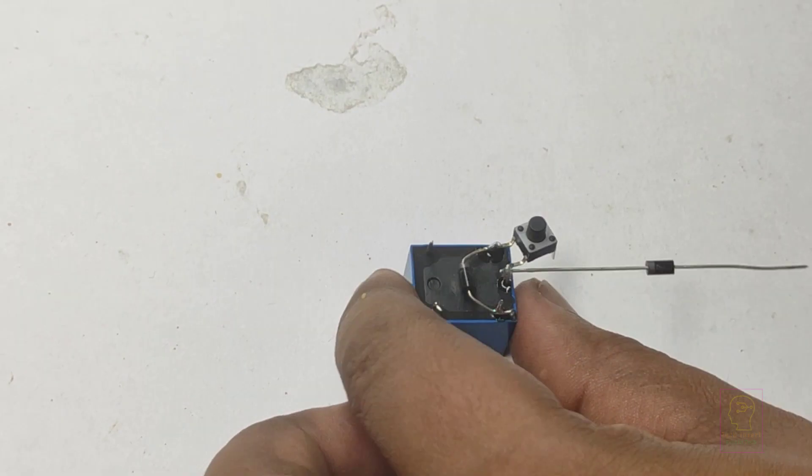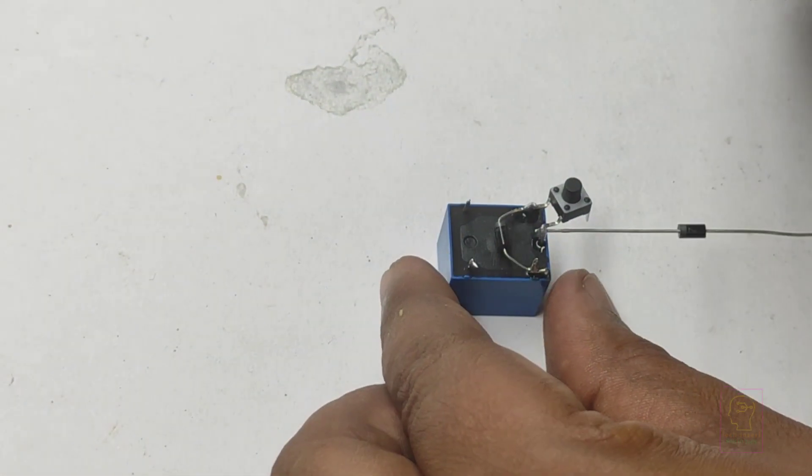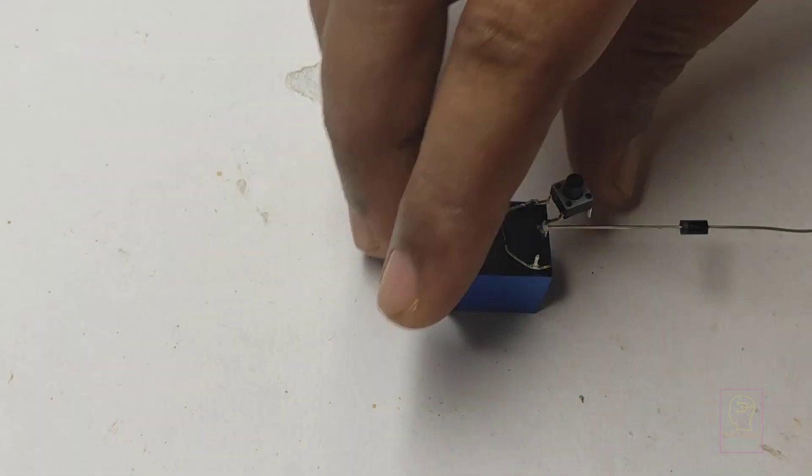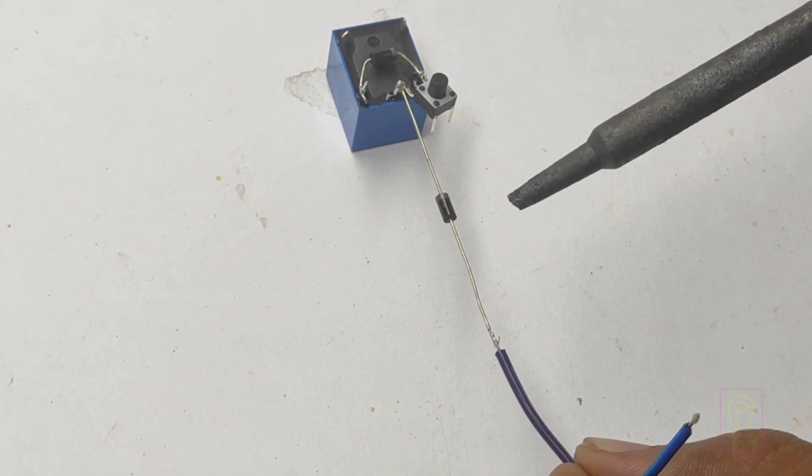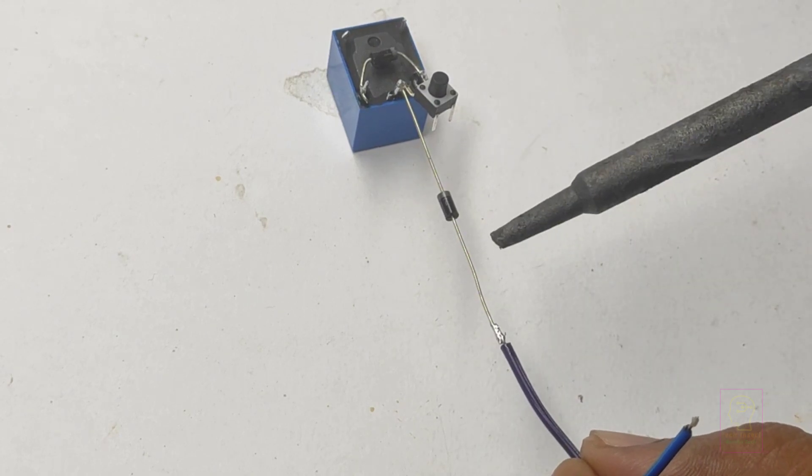If you are using this fuse for more than 1 ampere load, then replace the 14007 diode connected in input line with a diode which has higher ampere rating. The 14007 diode can handle 1 ampere at the most.